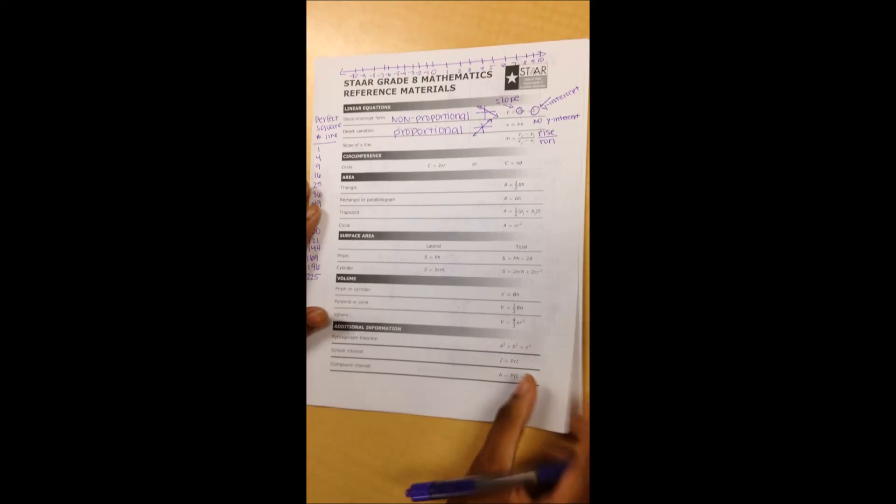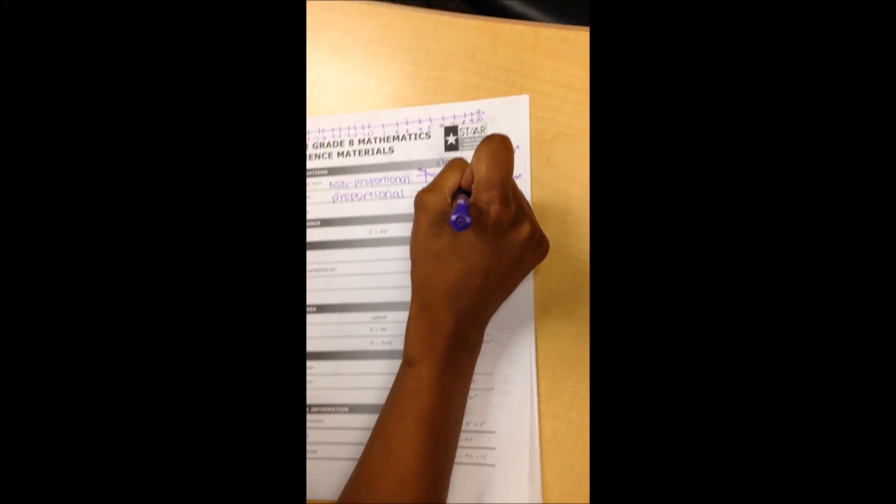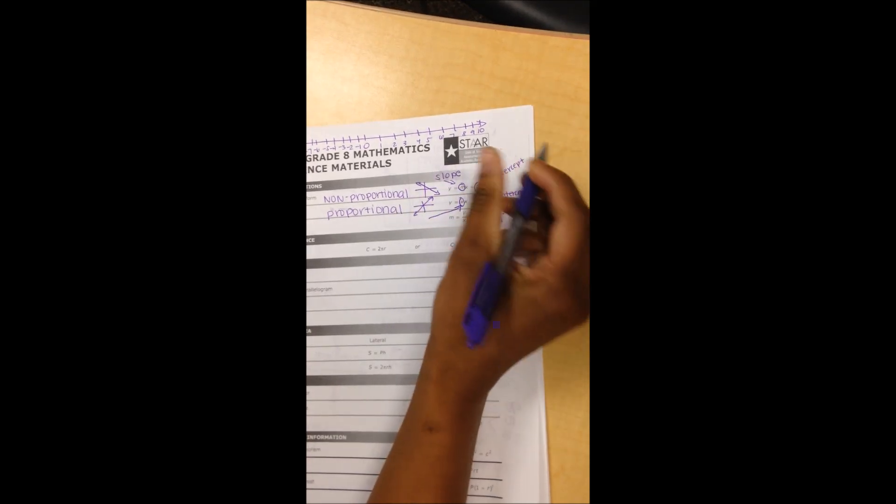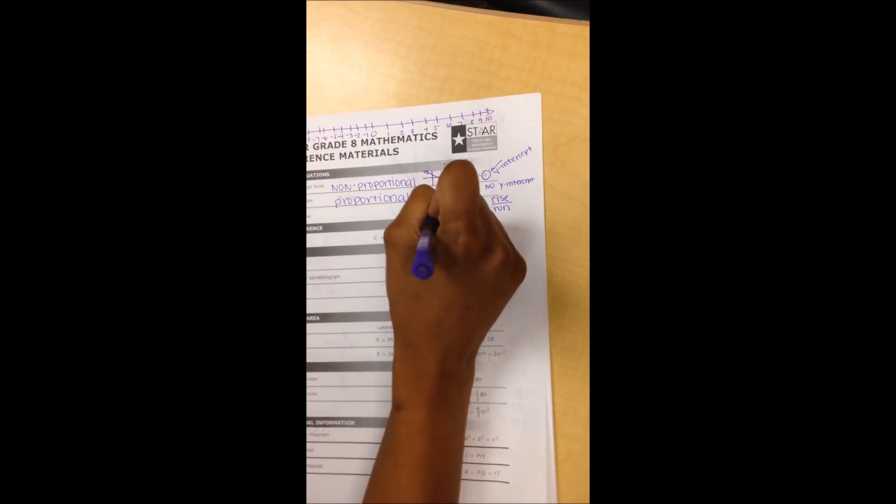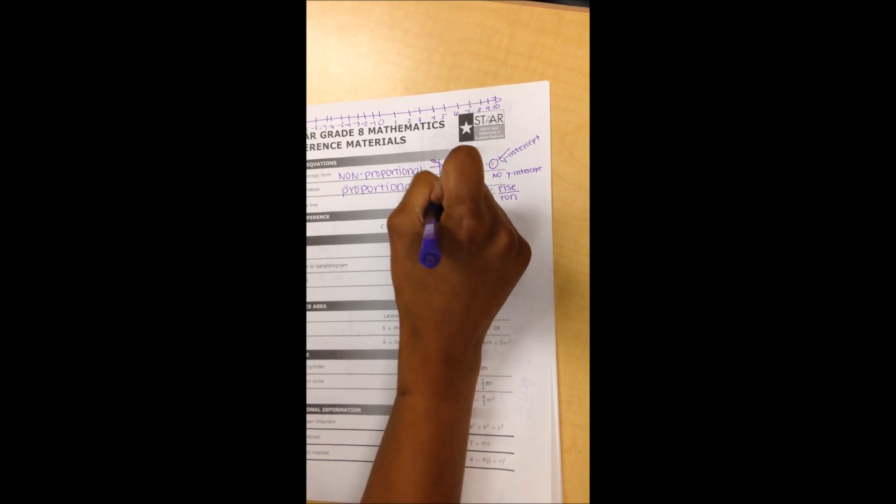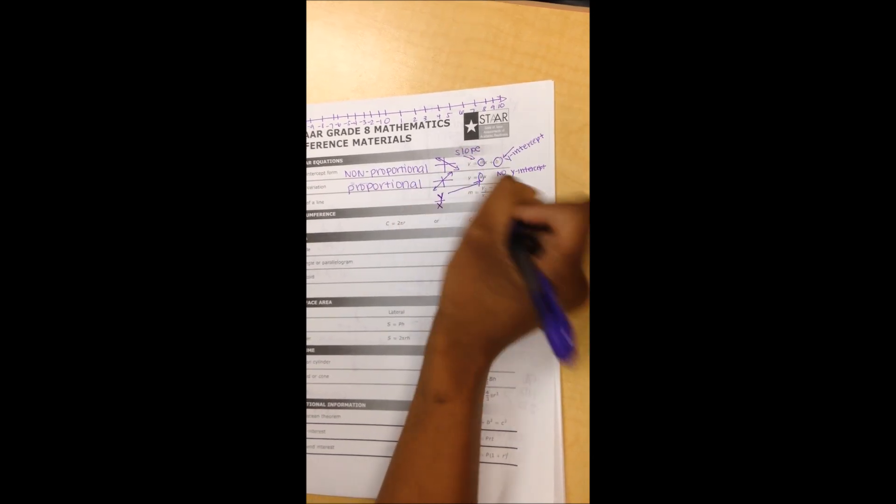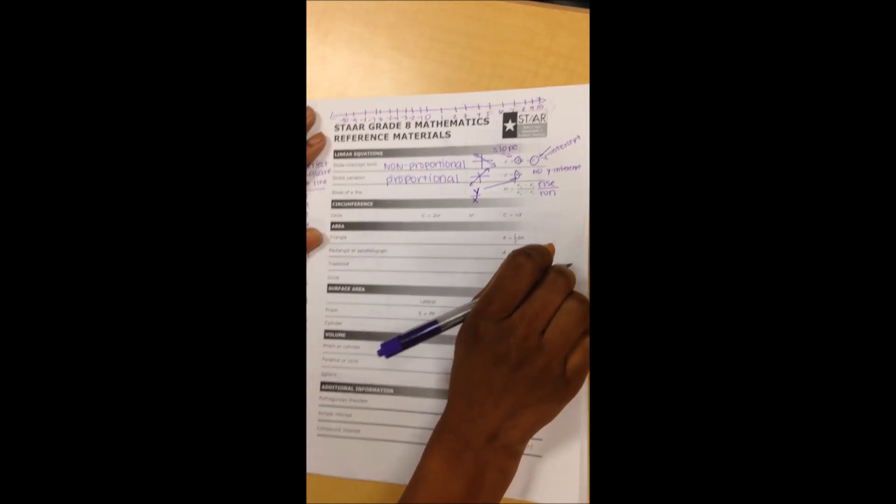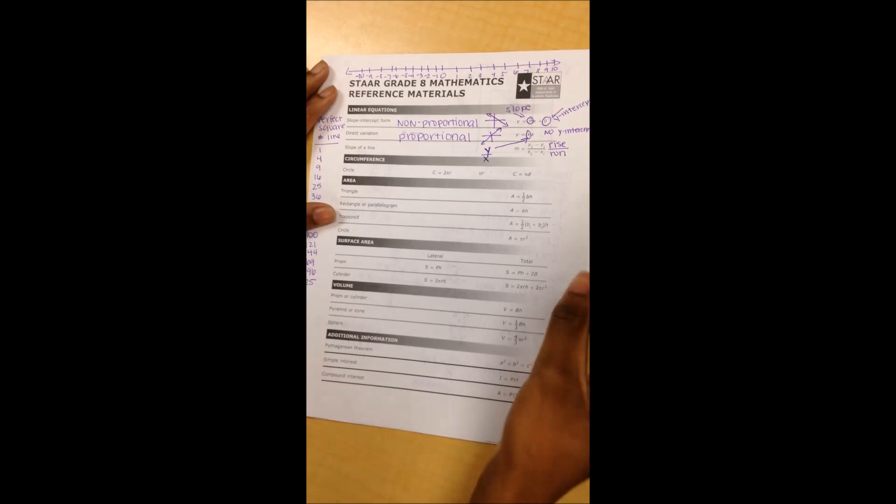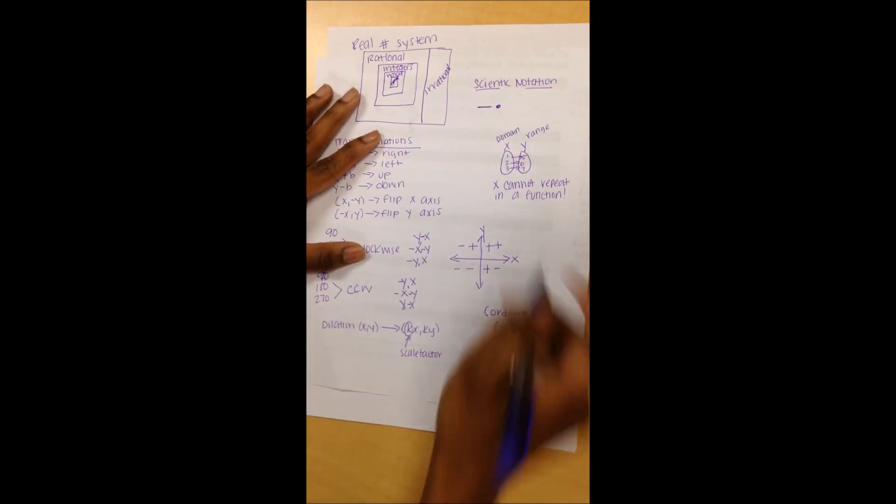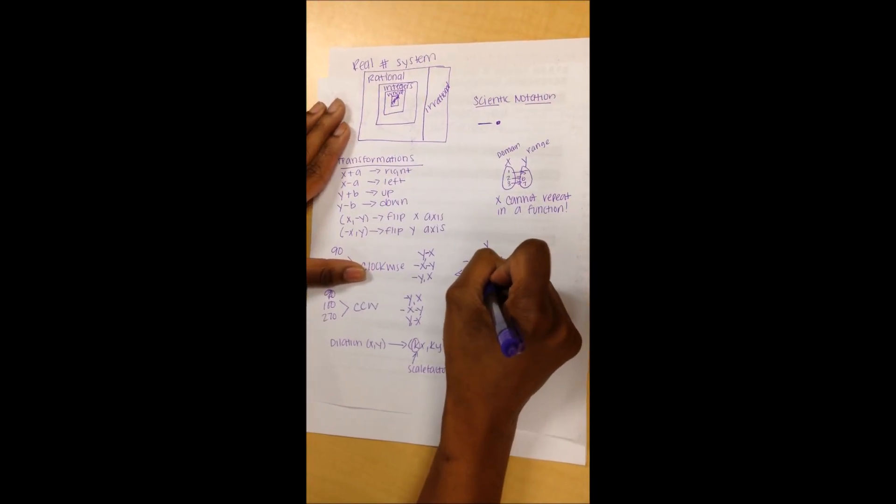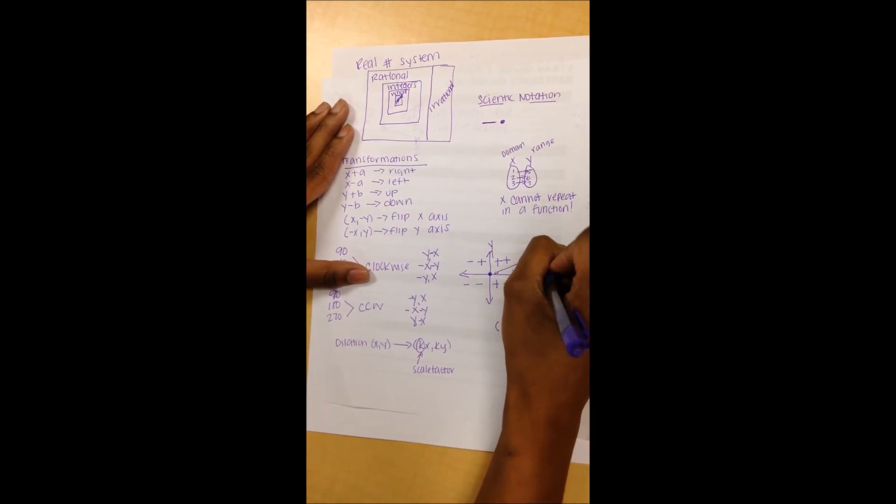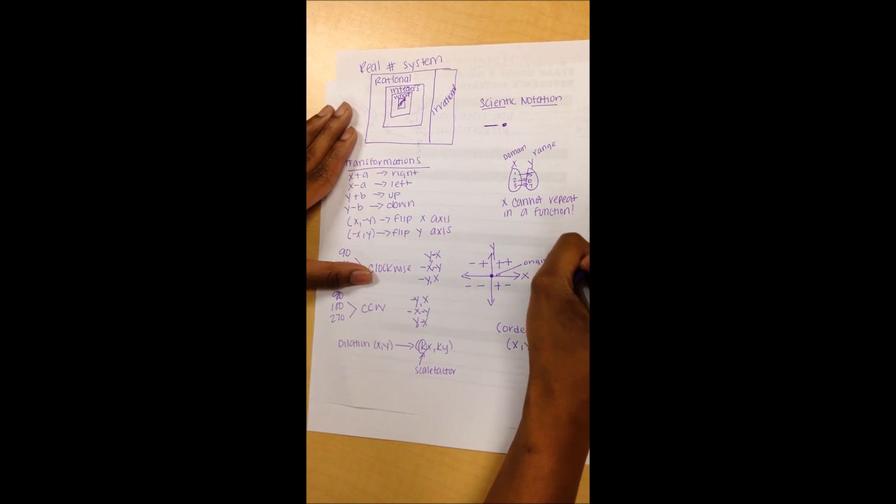Also back to the front of our reference chart, we got our k here and that is our constant of variation. To find that we have to remember that we divide y over x to find the constant of variation or constant of proportionality. On your coordinate plane, remember the place where your x and y axis cross is called the origin, which is 0, 0.